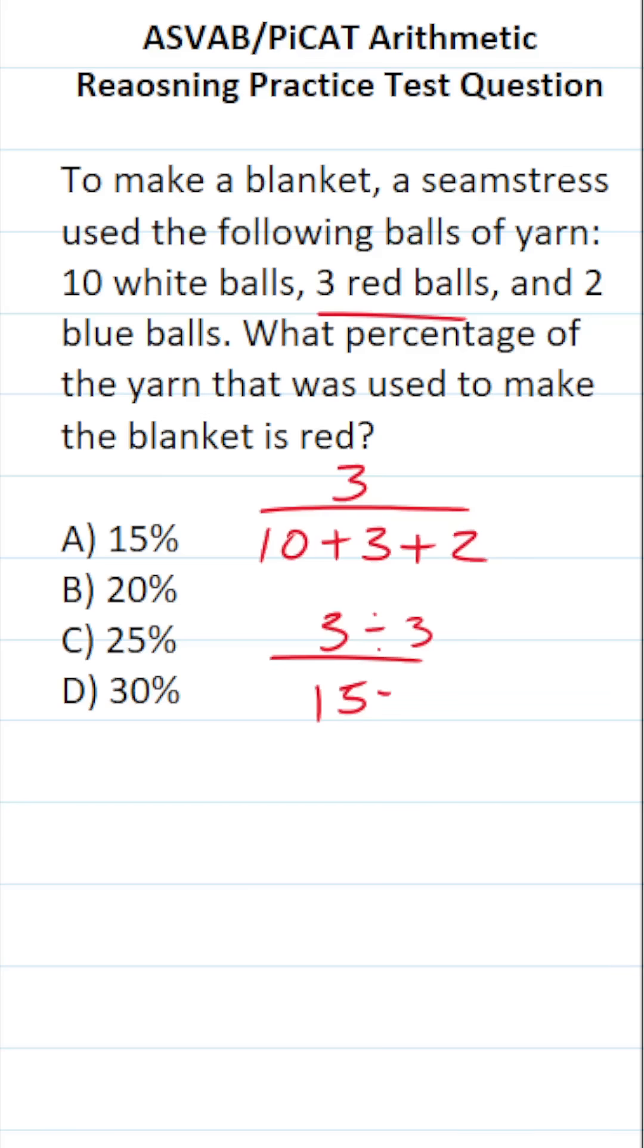Let's convert this to a percent first by reducing this fraction. 3 divided by 3 is 1, 15 divided by 3 is 5. So 1 fifth of the balls used to make the blanket were red.